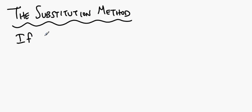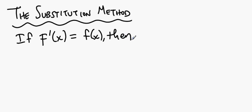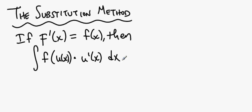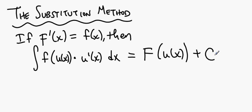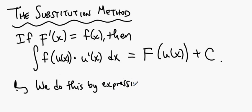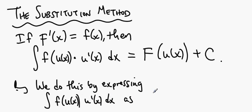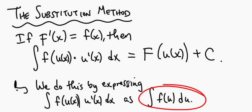The substitution method says: if capital F prime of x is little f of x, then the integral of f of u(x) times u prime of x dx is capital F evaluated at u(x) plus a constant. We do this by expressing the integral of f(u(x))·u′(x) dx as the integral of f(u) du. This is why the method is usually called the method of u substitution.